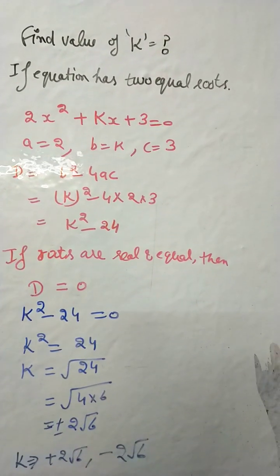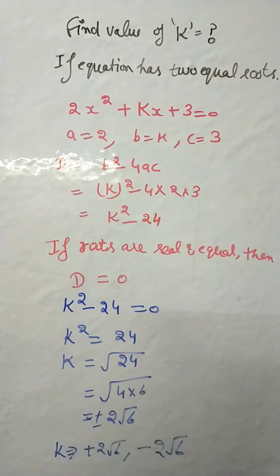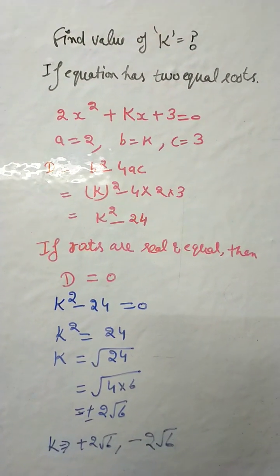Now, in the question it is given equation has two equal roots. Then we can see D = 0, because when D = 0, then roots are real and equal.